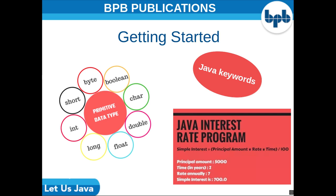Now we have variables. Variables are containers in which an item of data can be stored. Variables follow some rules to declare them. Java keywords are predefined or reserved words used by the language to perform a particular operation. As we have gained a basic idea about programming, we can now successfully write code in Java. Please refer to the book for writing a Java program for calculating simple interest.